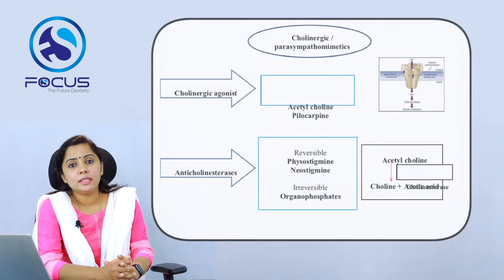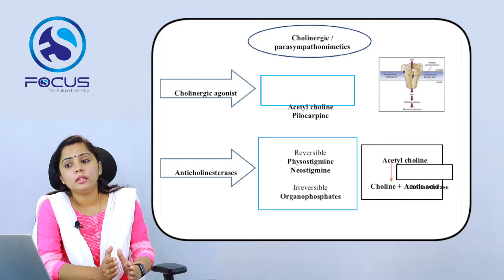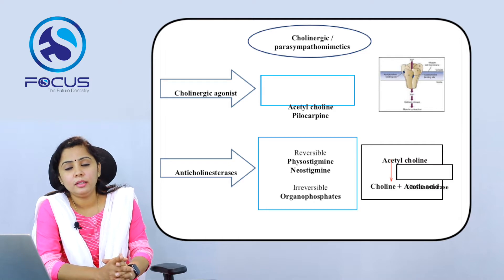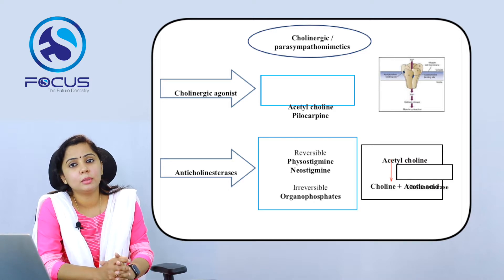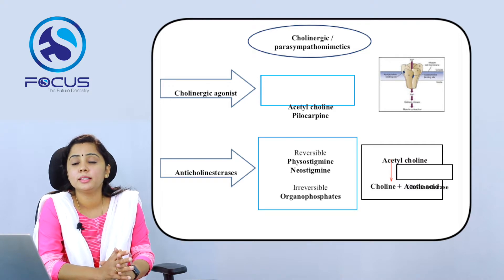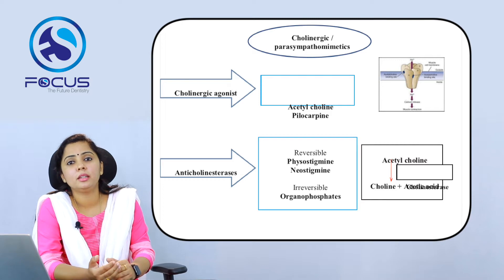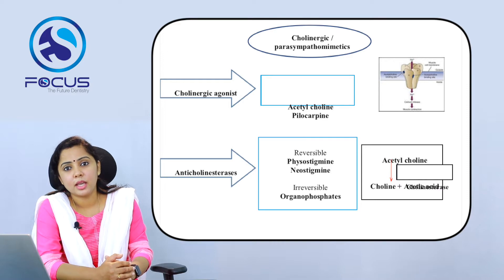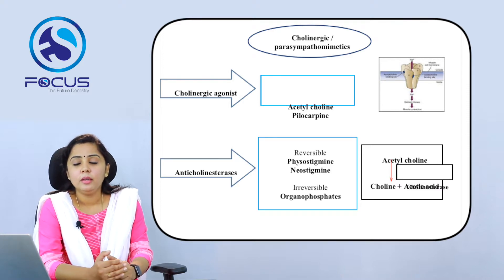There are two groups of cholinergic or parasympathomimetic drugs. The first is cholinergic agonists, which act on the same receptors where acetylcholine acts and mimic its action. The prototype drugs in this group are acetylcholine and pilocarpine.